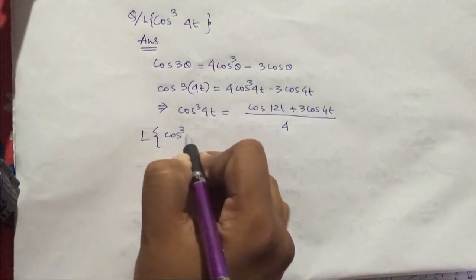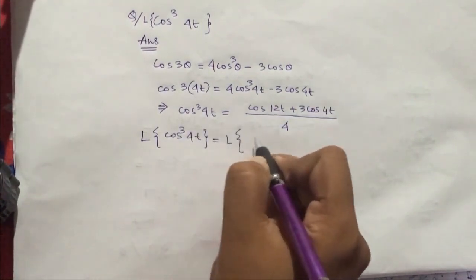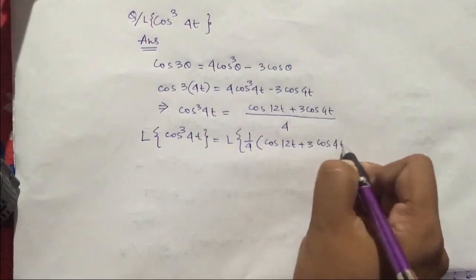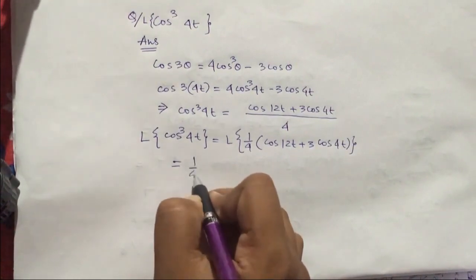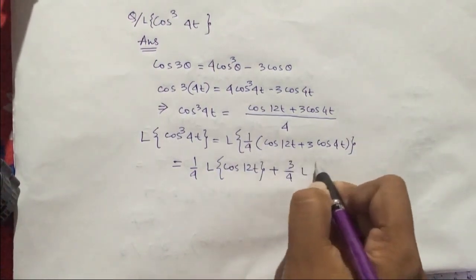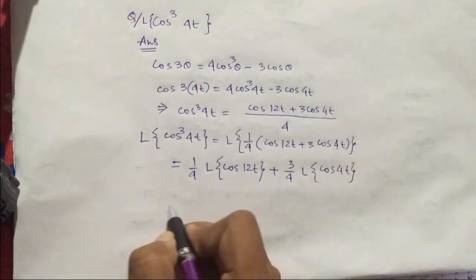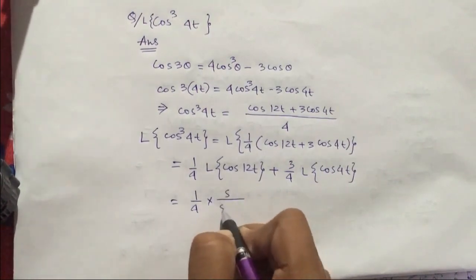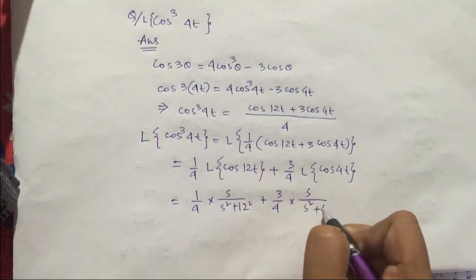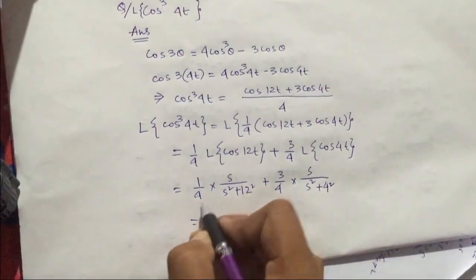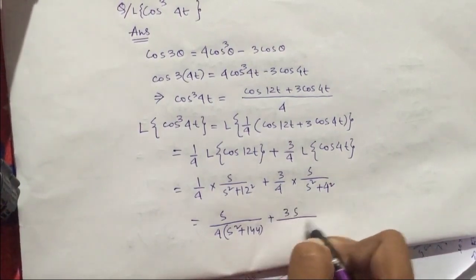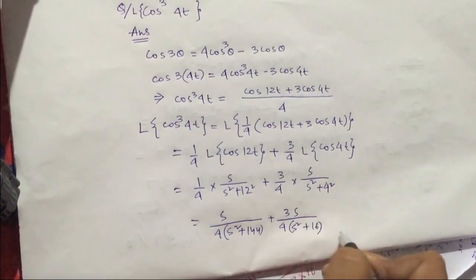Now, Laplace transform of cos³(4t) equals Laplace transform of [cos(12t) + 3cos(4t)] / 4. Separating the terms with the factor 1/4 outside, this gives (1/4)·s/(s²+144) plus (3/4)·s/(s²+16), which simplifies to s/[4(s²+144)] + 3s/[4(s²+16)]. So this is the answer for this question.